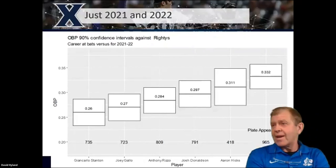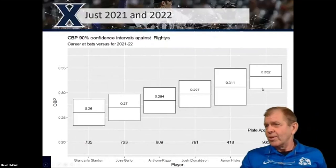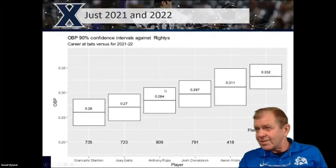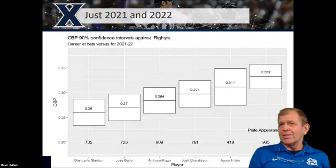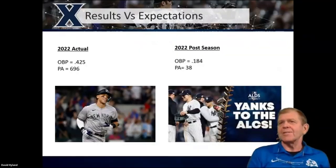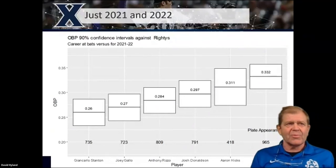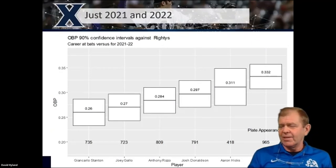We've got more plate appearances against right-handers. Aaron Judge starts to dominate some of these guys. Looking at 2021–2022, our confidence intervals don't necessarily give us a lot of confidence that these should be deciding factors. We've looked at confidence intervals, started with individual matchups and said we should throw those out. If I start to look at the last couple of years, I get some better data to consider.